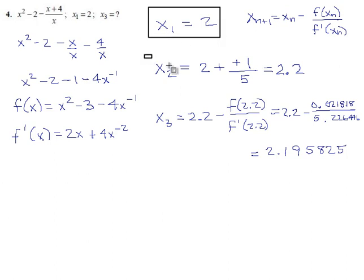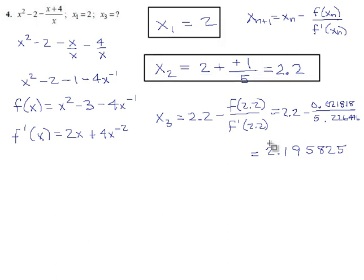So first approximation was 2, the second one was 2.2, and then it drops very slightly for the last one.